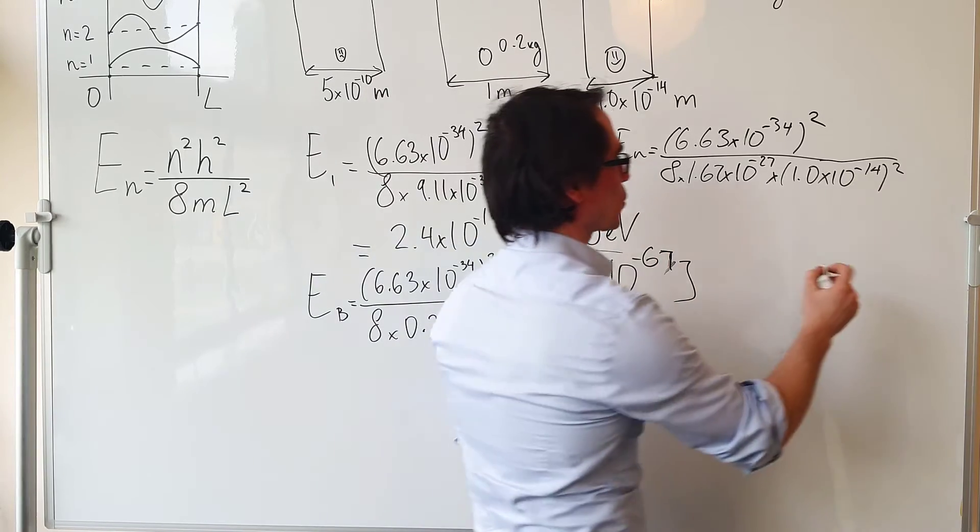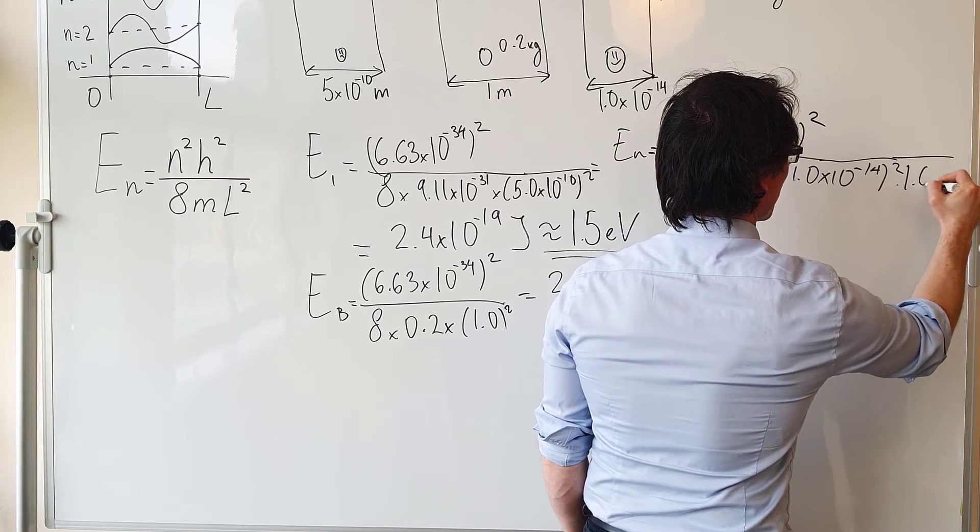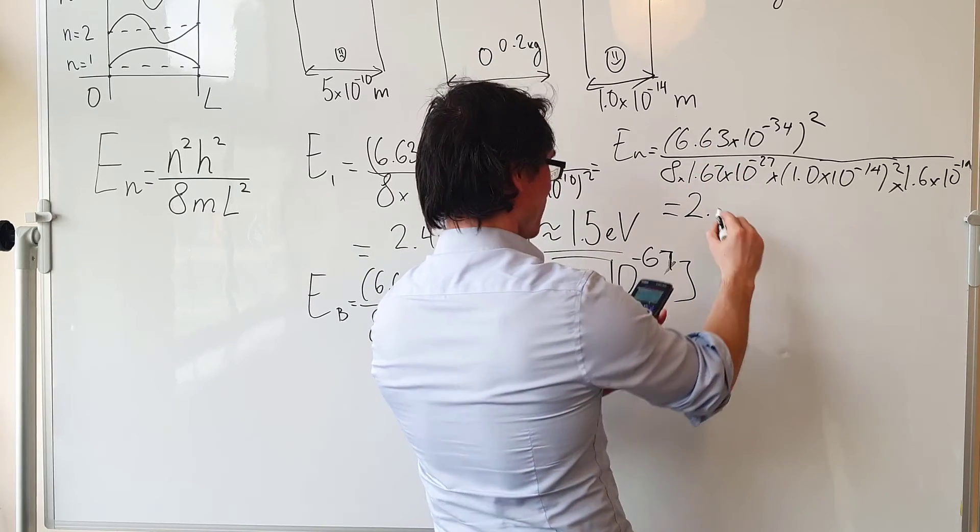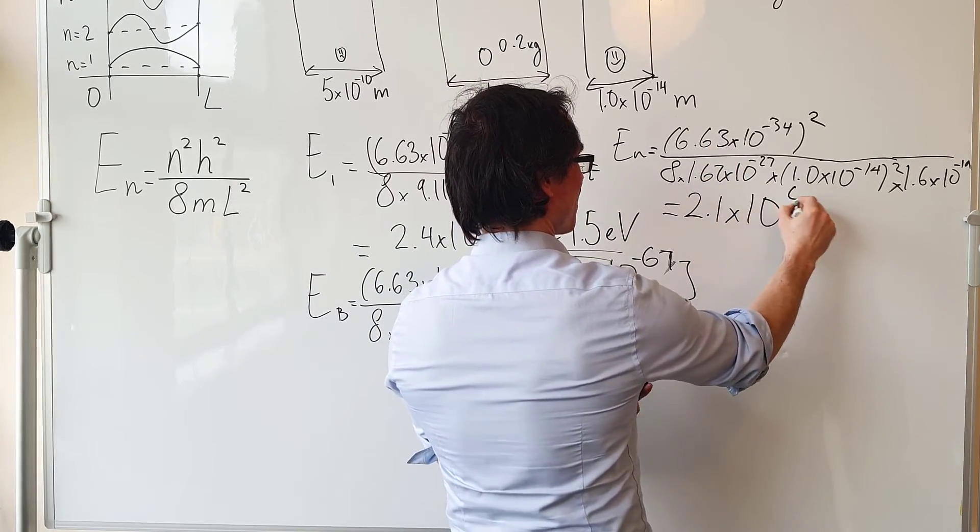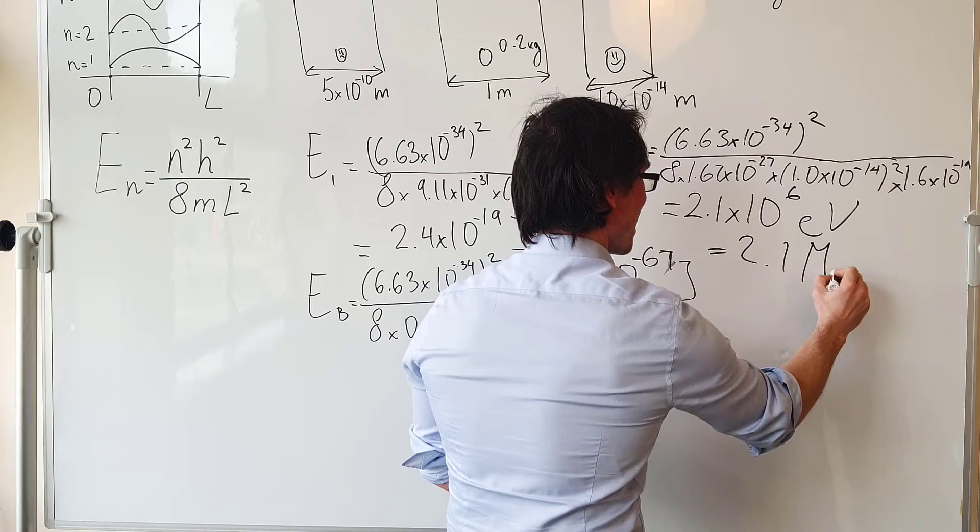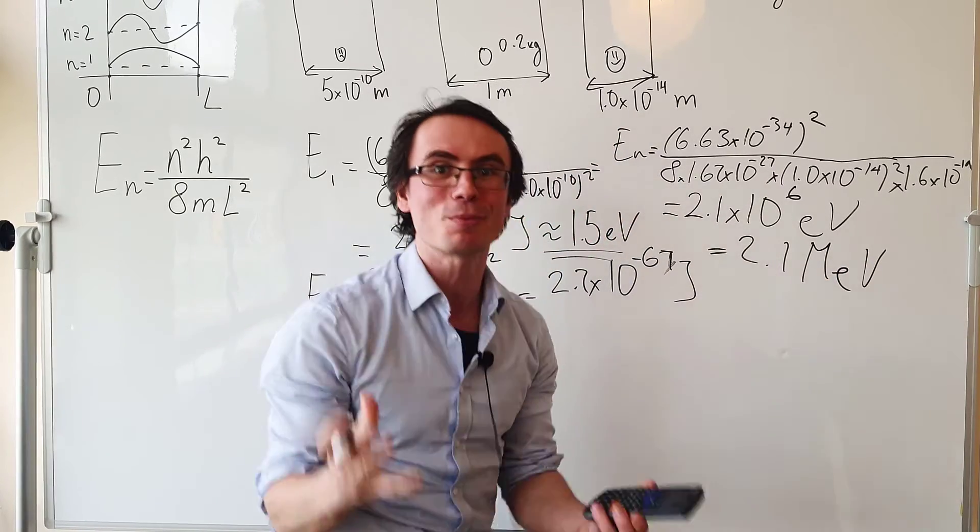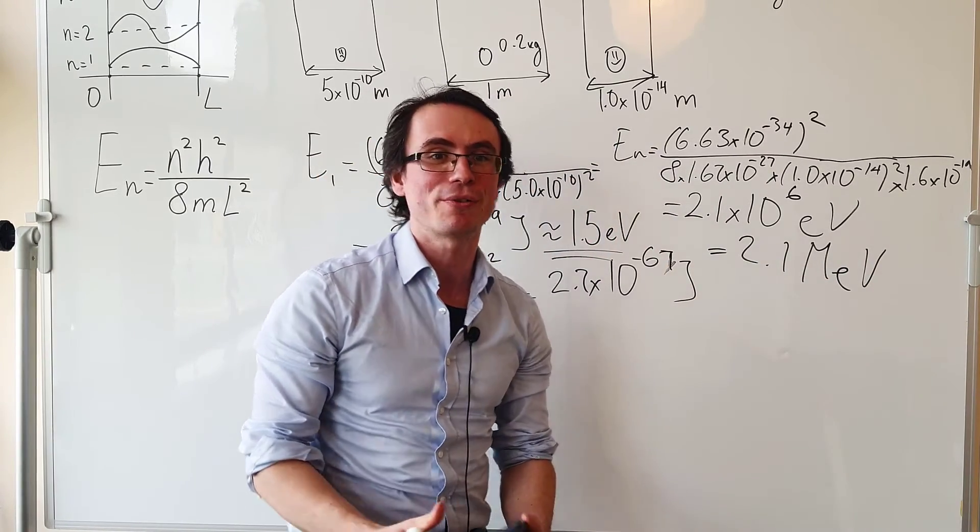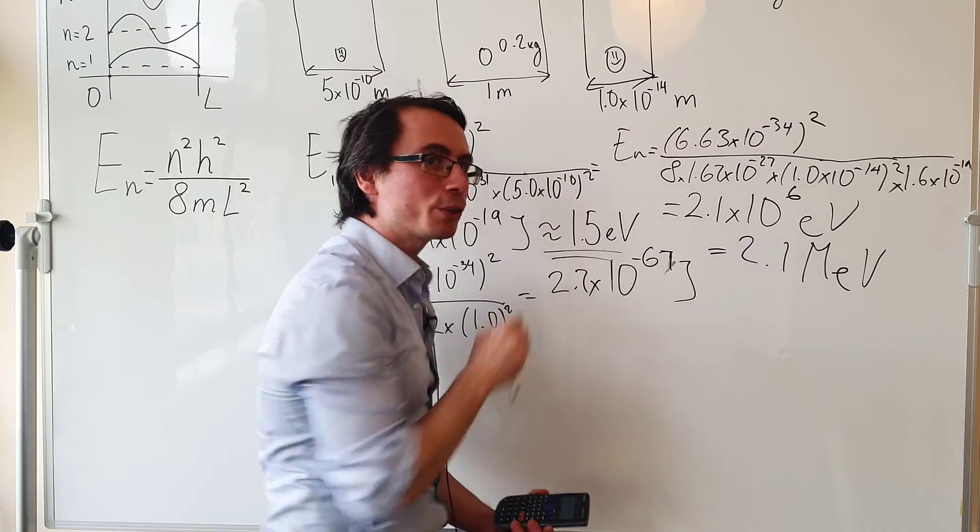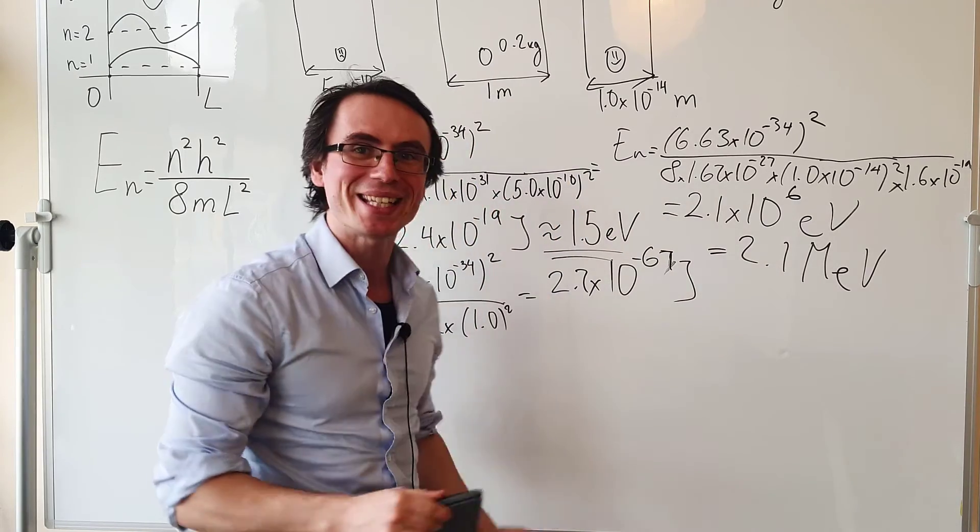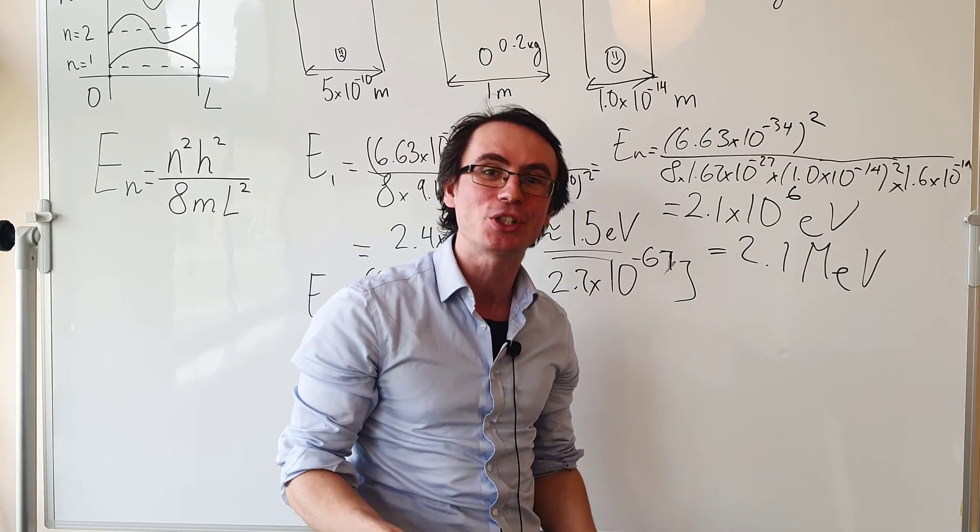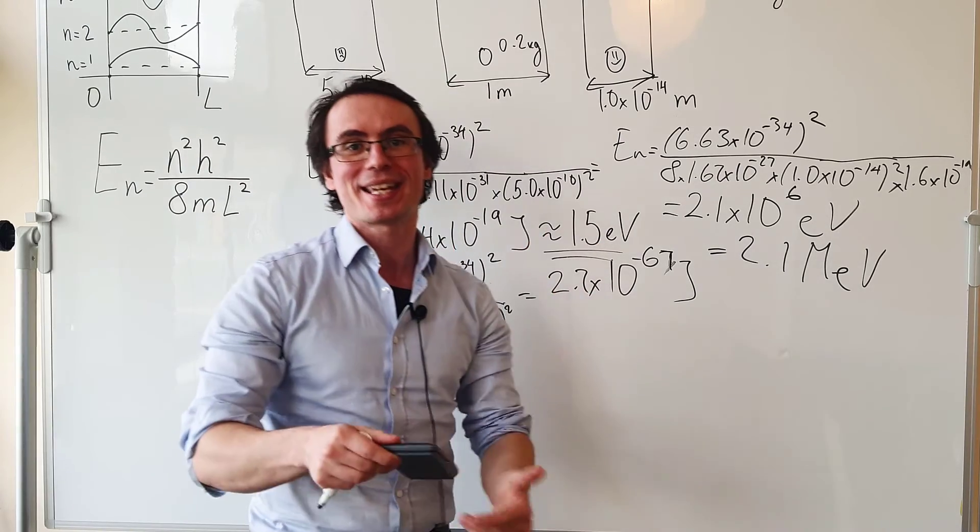I'm also going to divide by the electron charge, which is 1.6 times 10 to the power of minus 19. We are going to get a whopping 2.1 times 10 to the power of 6 electron volts, which is 2.1 mega electron volts, which is 2.1 million electron volts. Think about it: the lowest energy state of a proton inside the nucleus is a few million times larger in terms of energy compared to the lowest energy level of an electron within the atom.